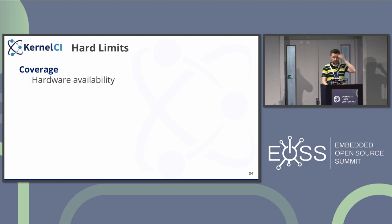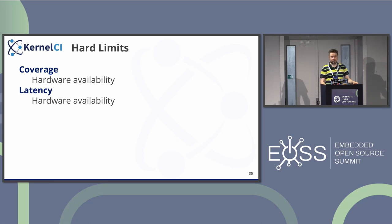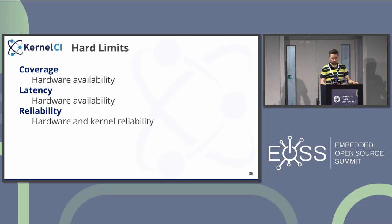Hard limits: since the kernel is an abstraction layer for hardware, to really test it you need to test against all the hardware. The natural limit for coverage is how much hardware we have that we can test on. Latency is again just hardware availability — how many tests you can run at the same time; the more hardware you have, the faster you can go. Reliability is also dependent on hardware — if the hardware is not working reliably, it's hard to do reliable tests. Of course, the kernel itself matters, but tests contribute to improving kernel reliability.